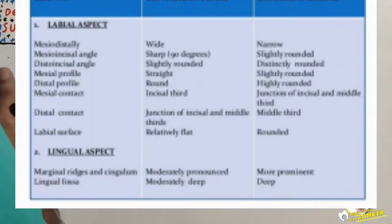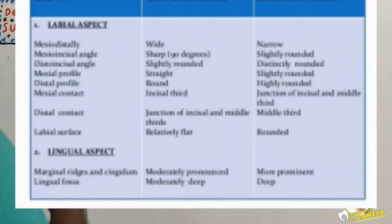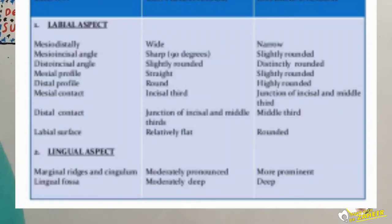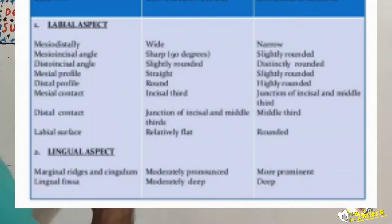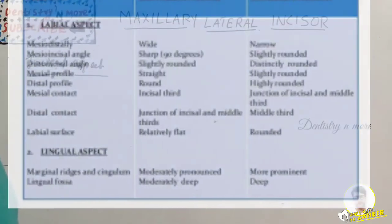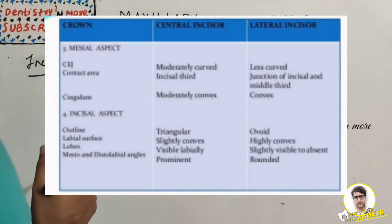Regarding contact areas: the mesial contact is at the incisal third in the central incisor, but at the junction of the incisal and middle third in the lateral. The distal contact is at the junction of the incisal and middle third in the central, but at the middle third in the lateral. The labial surface is relatively flat in the central but rounded in the lateral incisor. On the lingual aspect, the marginal ridges, cingulum, and lingual fossa are moderately pronounced and moderately deep in the central, but more prominent and deep in the lateral incisor. On the mesial aspect, the CEJ is moderately curved in the central but less curved in the lateral.